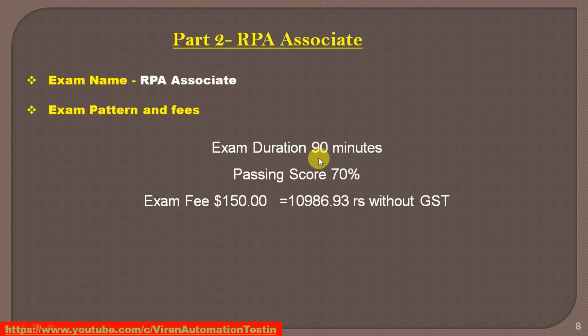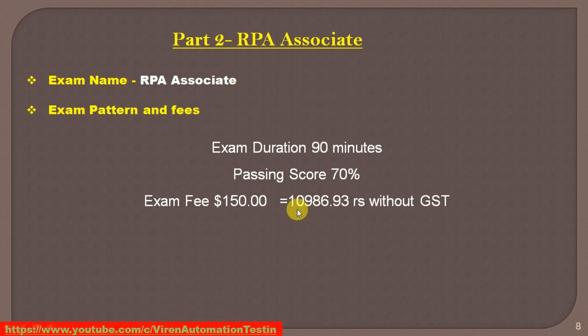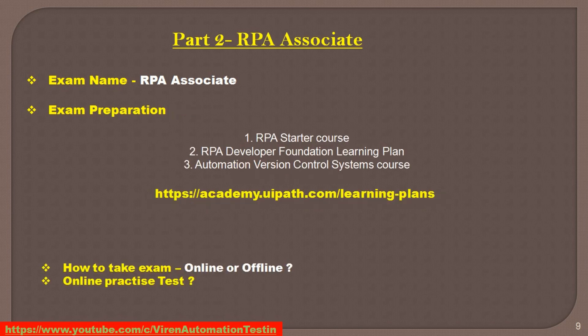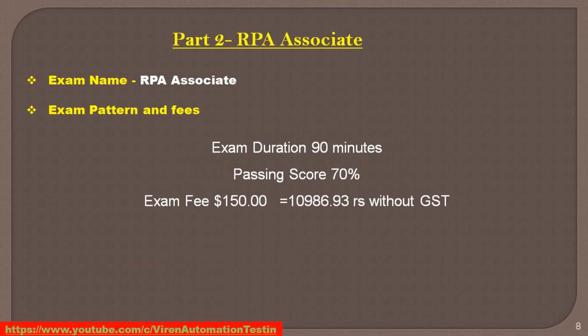The exam duration will be 90 minutes and your passing score is 70%. The exam fees will be 150 USD. If you calculate it in rupees, you can see the amount on my screen — this is without GST. You have to pay this amount online before the exam, and then you can schedule the exam date and time.